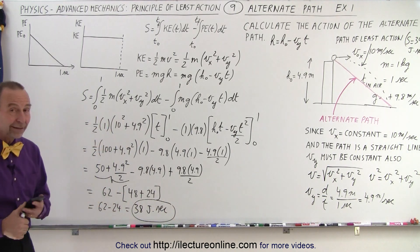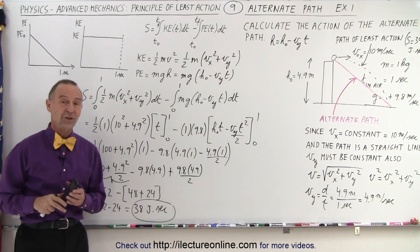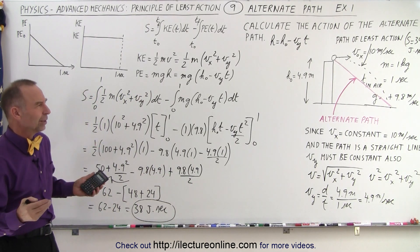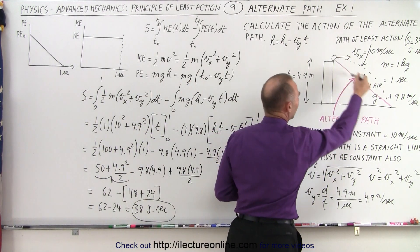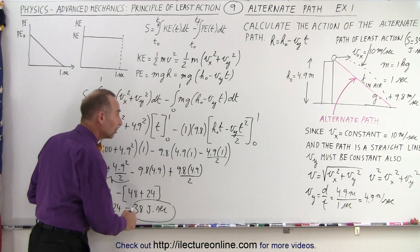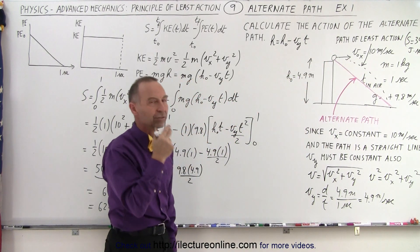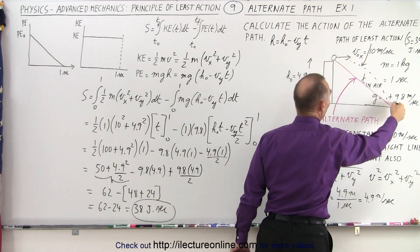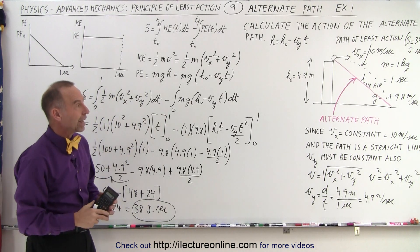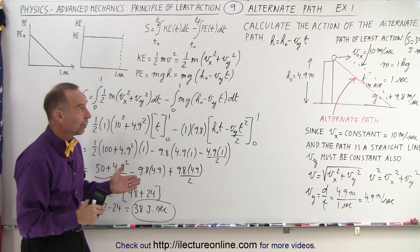So we got 38, and the path of least action was 34. The number is bigger, which means that is not a path the object will take. Of course, we already know that from experience — when we throw a ball straight out, it doesn't take the straight line path. The straight line path has smaller kinetic energy but also smaller average potential energy, and their difference is a bigger number, so the projectile path has the least action. What if we take a different path going the other way? On the next video we'll try that and see if we can come up with an alternate path where the action is a smaller number.